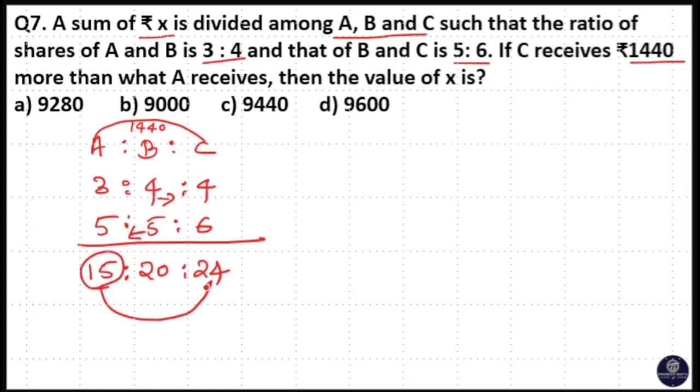Difference between A and C is 9 unit. So 9 unit is 1440. So that means 1 unit is 1440 divided by 9. That is 14 by 9, 1, 54 by 9, 6, 0 comes here. So 1 unit is 160.